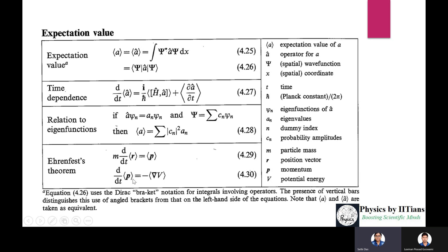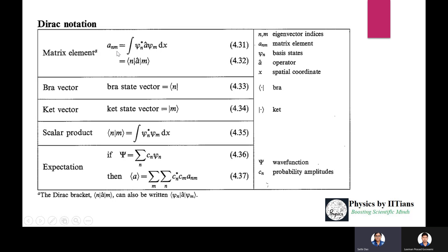Ehrenfest's theorem: m d/dt <r> equals <p>, and d/dt <p> equals minus <grad V>. The matrix element A_nm equals <n | A-hat | m>. In bra-ket notation, the scalar product is <psi_n | psi_m>, or equivalently the integral of psi_n-star psi_m dx. The expectation value for psi = sum c_n phi_n is: <A> equals sum over m and n of c_n-star c_m A_nm, where A_nm is the matrix element and psi_n are the basis vectors.